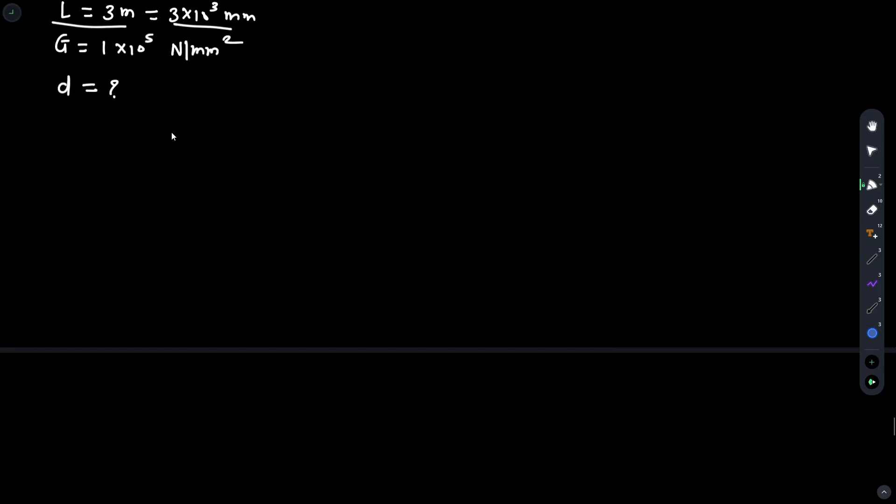To find torque, we have the formula P equals 2 pi N T upon 60. So power equals 300 into 10 raised to 6 equals 2 multiplied by pi multiplied by N.